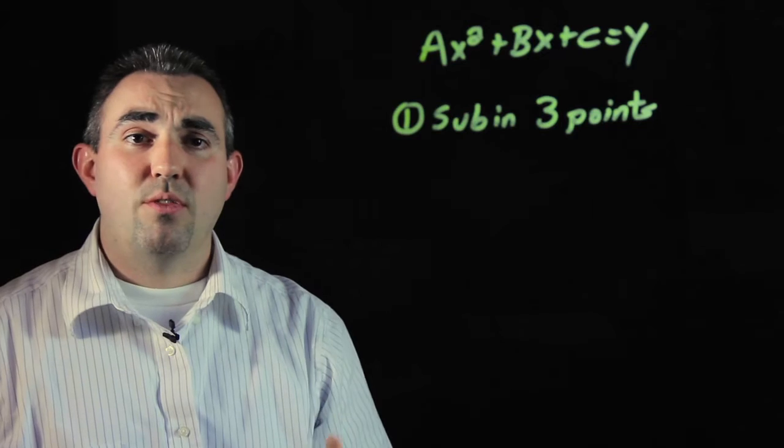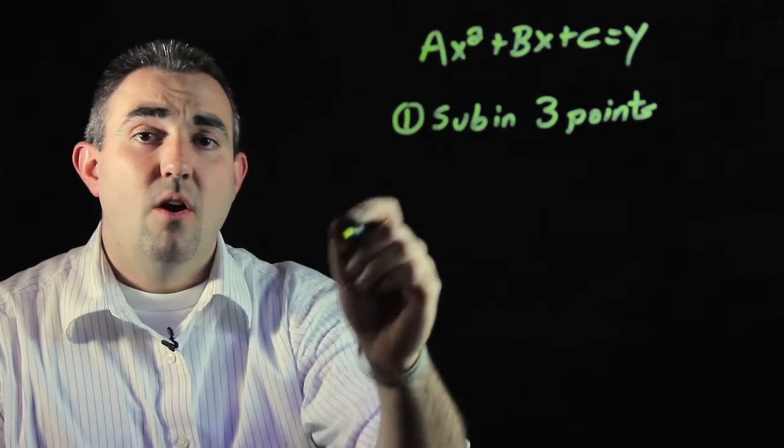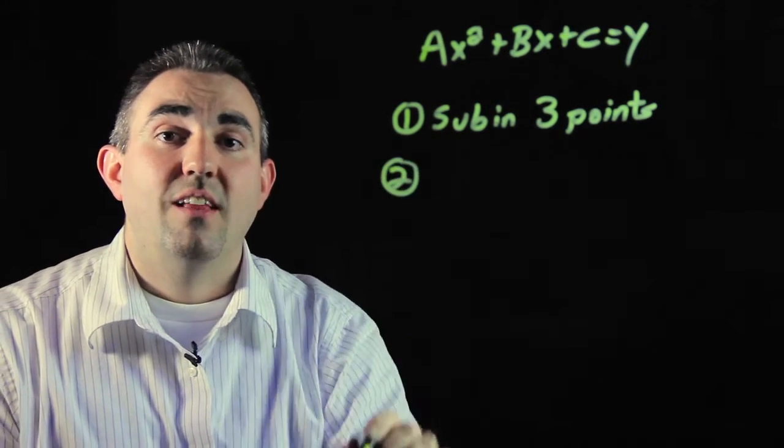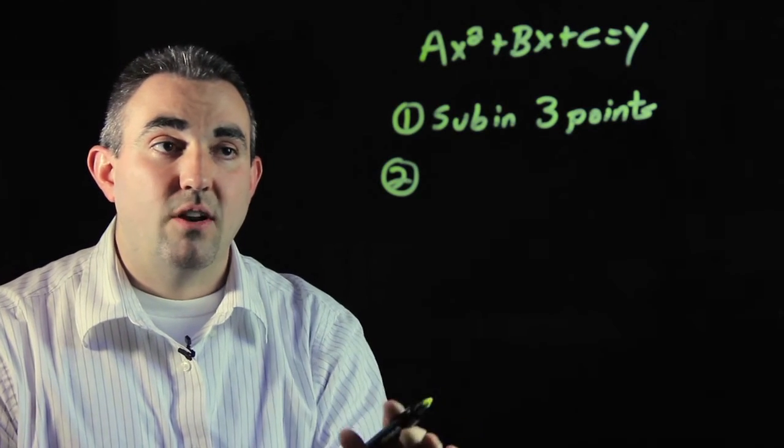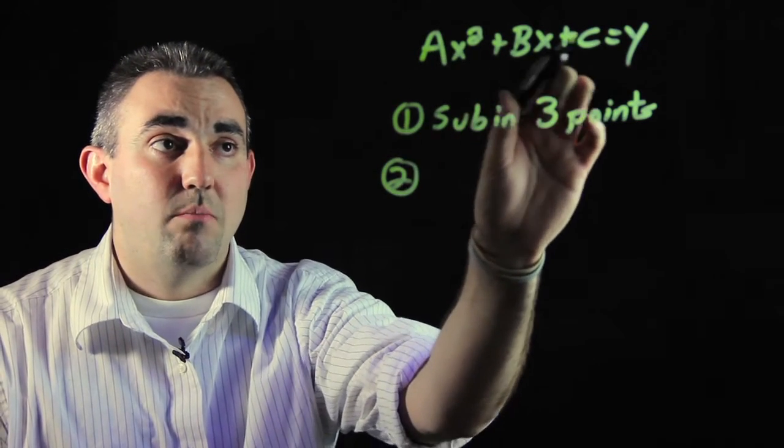When you do this you're going to get three separate equations. What you need to do with those three separate equations is use the elimination method to get rid of one of the variables either a, b, or c.